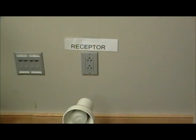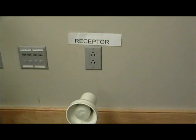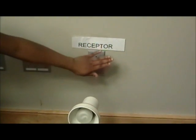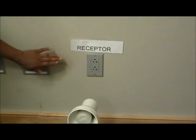This can be thought of as a wall outlet. The wall is a cell wall, and the outlet is a receptor on the outside of the cell.